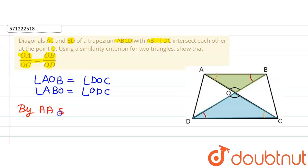So by AA similarity rule, we can say that triangle OAB is similar to triangle OCD.